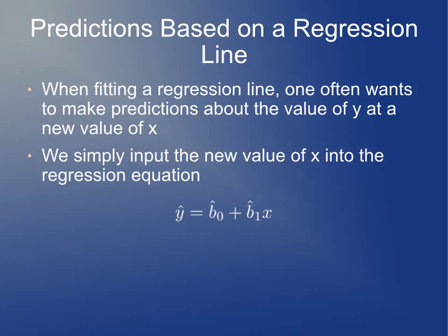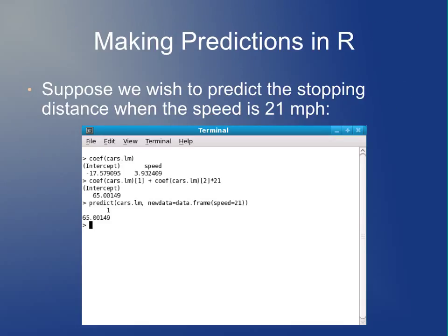Once you've calculated a regression line, you may want to make predictions about the value of y for a new value of x. You input the new x value into the regression equation: multiply x by b̂₁ and add b̂₀ to get your predicted value of y. For example, the coefficients are −17.58 and 3.93, so to predict the stopping distance of a car going 21 mph, we calculate 3.93 × 21 − 17.58, ending up with almost exactly 65 feet.